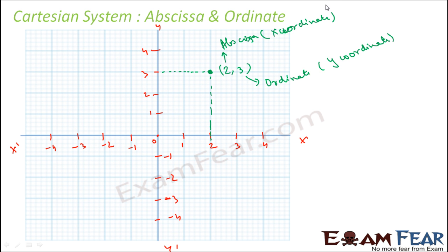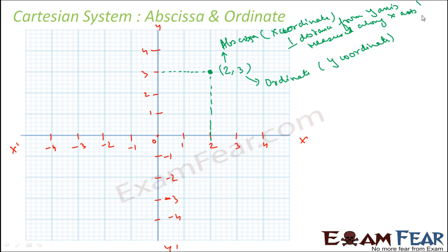The abscissa — that is, the x-coordinate — is the perpendicular distance from the y-axis. The ordinate — that is, the y-coordinate — is the perpendicular distance from the x-axis.